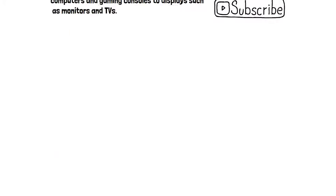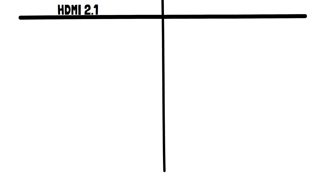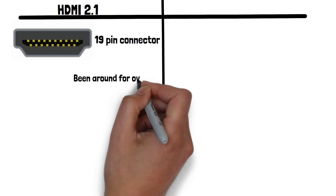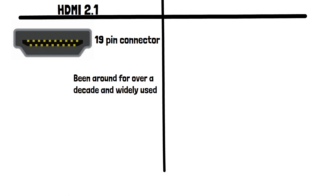Let's look at HDMI, specifically the latest version of it — that's HDMI 2.1. HDMI, or High Definition Multimedia Interface, uses a 19-pin connector as we can see here. It has been around for over a decade and is widely used in consumer electronics. It's a versatile standard that can transmit both audio and video and is found on a wide range of devices, including TVs, Blu-ray players and gaming consoles.